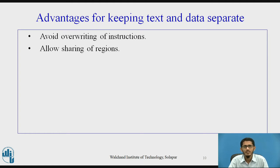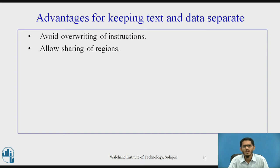The second advantage of having separate regions for text and data is to allow sharing of regions. If a process cannot write its text region, its text does not change from the time the kernel loads it from the executable file. If several processes execute a file, they can therefore share one text region, saving memory. Thus, when the kernel allocates a text region for a process in exec, it checks if the executable file allows its text to be shared, indicated by its magic number. If so, it follows the algorithm allocreg to find an existing region for the file text or to assign a new one.